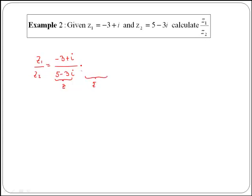z bar, which in this case would be 5 plus 3i. Remember that if you multiply at the bottom of a fraction, for the fraction to remain unchanged, you have to do the same on top.